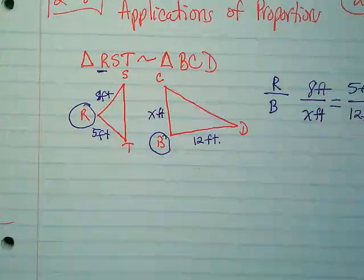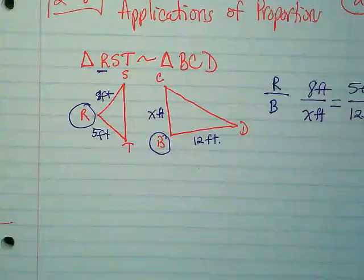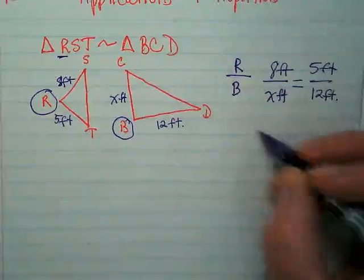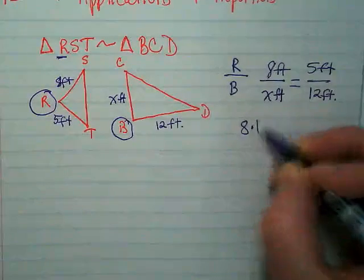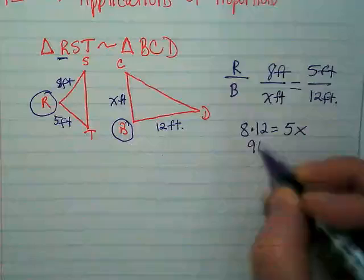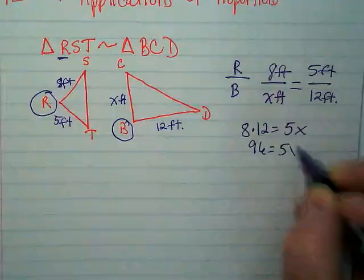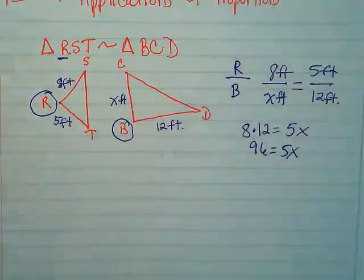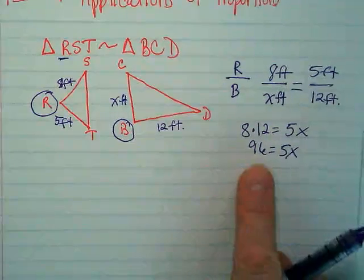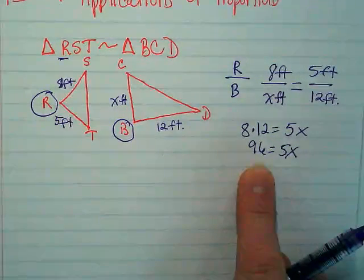And then we're just going to cross-multiply and divide. 8 times 12 is equal to 5X. This is 96 is equal to 5X.